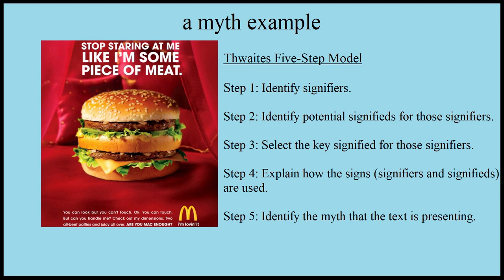The Thwaites model has five steps. Step one: identify the signifier. Step two: identify the potential signifieds for those signifiers. Step three: select the key signified for those particular signifiers. Step four: explain how those signs are used. Step five: identify the myth that the text is presenting. You can see why you need to know the Saussurean semiotic model — this is completely based on it. So let's identify the signifiers. There's the language at the top and the bottom, the burger itself, and the satin bedspread — four primary signifiers.